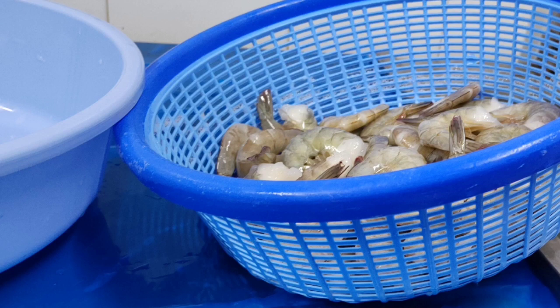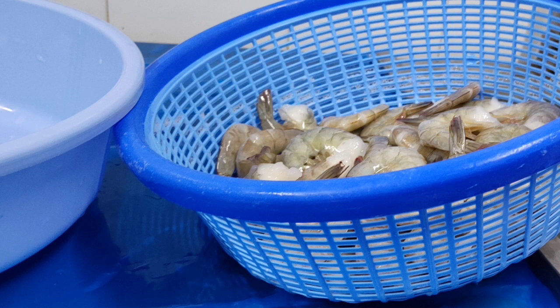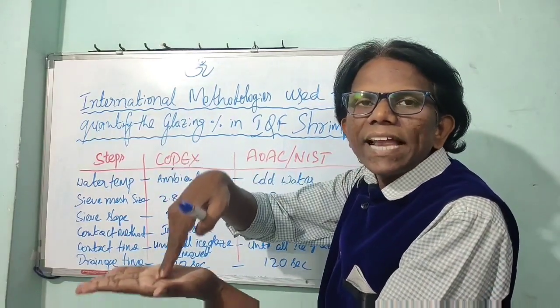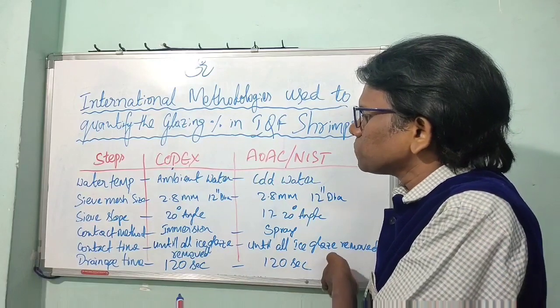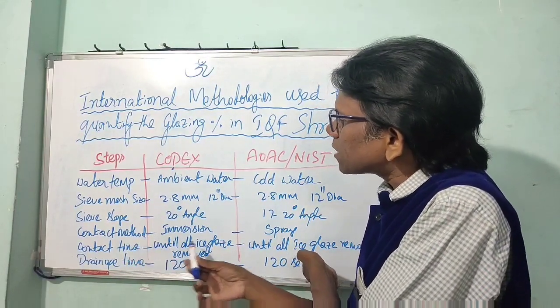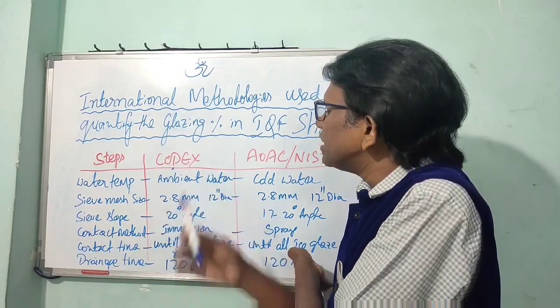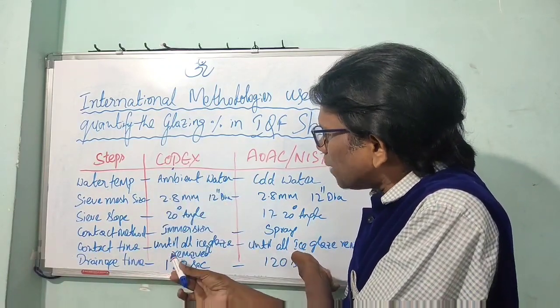Once you feel that the ice glaze has been removed from the slabs, you have to place the sieve in a slanting position at a 20-degree angle. The Codex method specifies that the contact method is immersion in ambient water, and the contact time is until all ice glaze is removed. You should not shake or throw the shrimps, and the drainage period is 120 seconds, or two minutes.